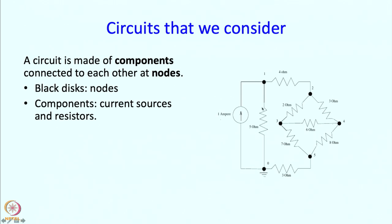Components are current sources or resistors. For example, this is a resistor, this is another resistor, and this is what is called a current source. You can have many other kinds of components, but as we said, this is a baby program and we are only going to consider these two components.